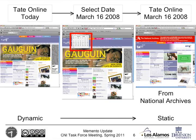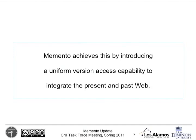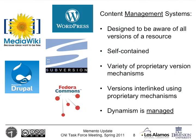We have the reverse trend from what Christine was talking about, where instead of going from static to dynamic, we want to take that dynamic content and go back to previous static snapshots, and we want to do that automatically. We achieve this by introducing a uniform version access capability to the web that allows you to specify in one common way the time you want to see the website at.